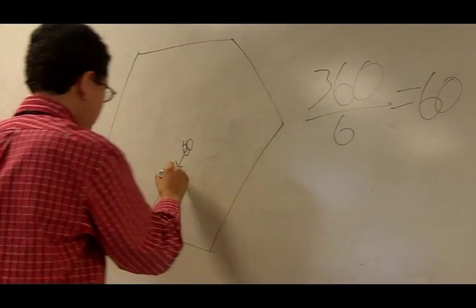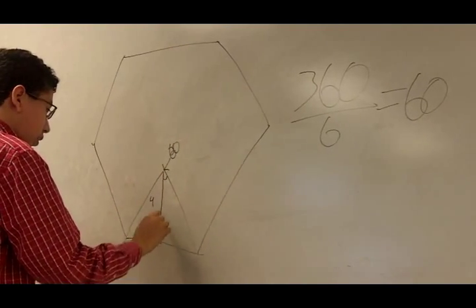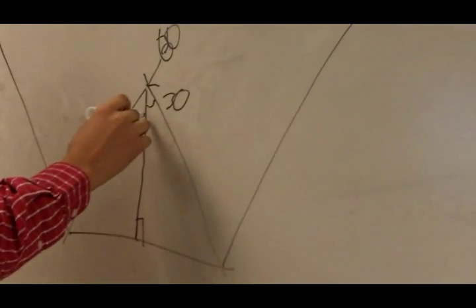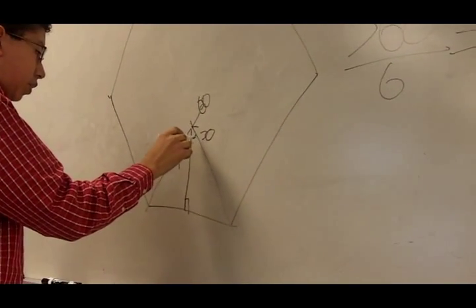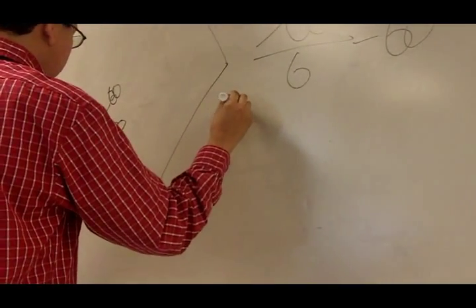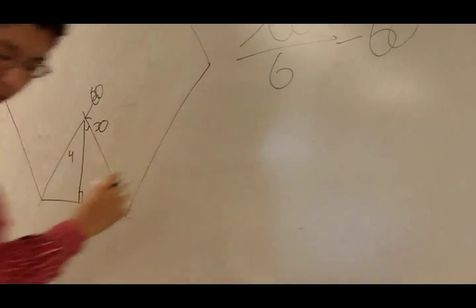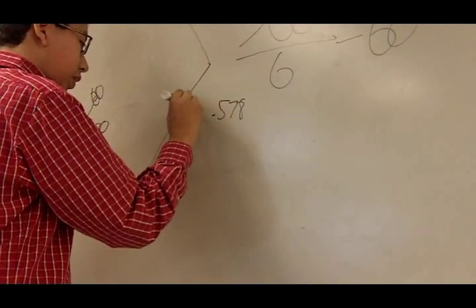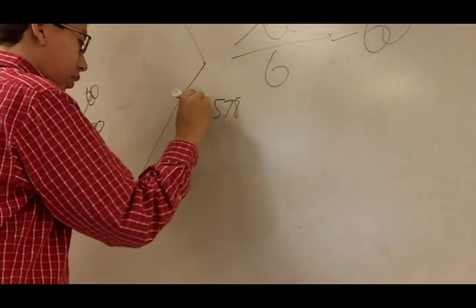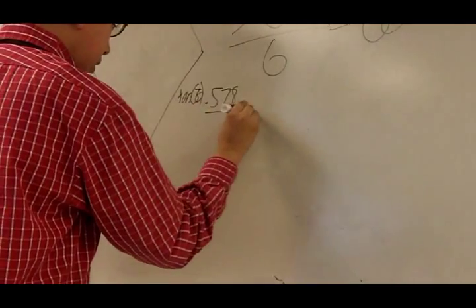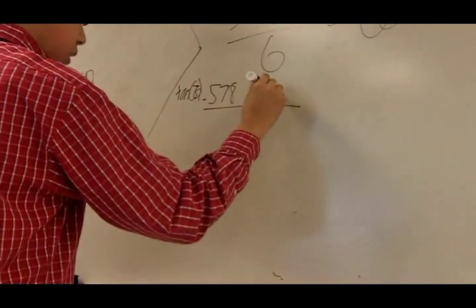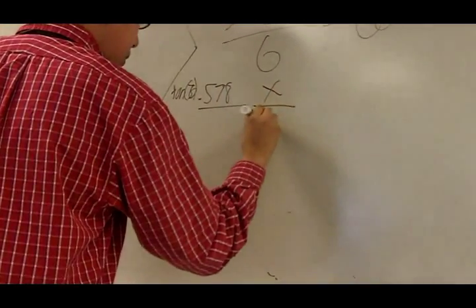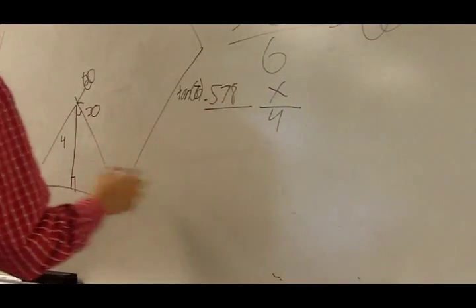And then we divide that by 2 to find this little angle which would be 30. Then we have to find the tangent of 30 which would be 0.578 and then we put that like that. And then x over 4. 4 would be the apothem.